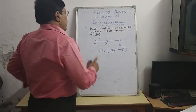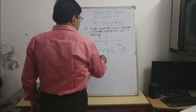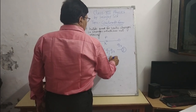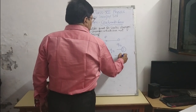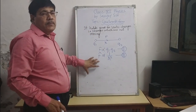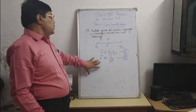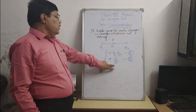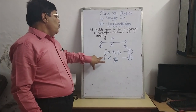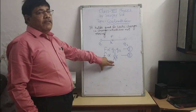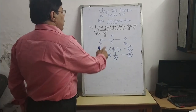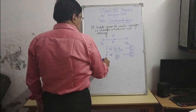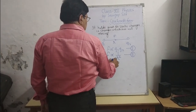It has also been found that the force acting between them is inversely proportional to 1 upon R square. This is equation number two. Inversely proportional means if the value of F increases, the value of R will decrease. And if the value of F decreases, the value of R will increase. Now combining both equations 1 and 2.